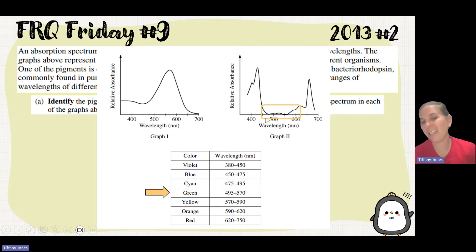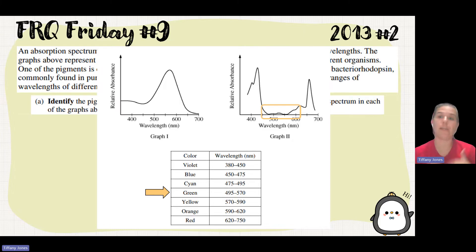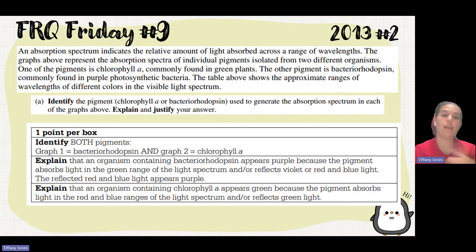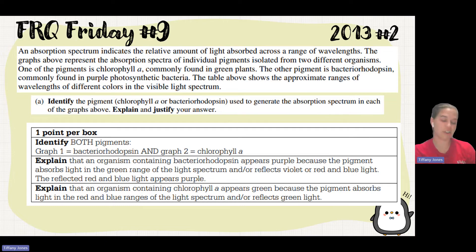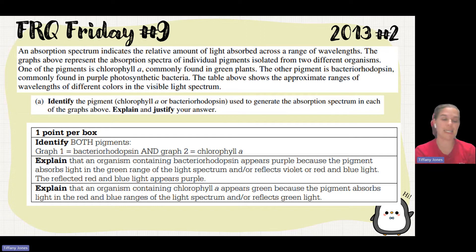Looking at graph two, I see a low amount of absorbance in the 500 nm range, which tells me that green light is being reflected. So graph two is showing chlorophyll. They wanted you to correctly identify the graphs — bacteriorhodopsin versus chlorophyll — and explain why bacteriorhodopsin appears purple: because it absorbs light in the green range and reflects back violet or red-blue light, making it appear purple.